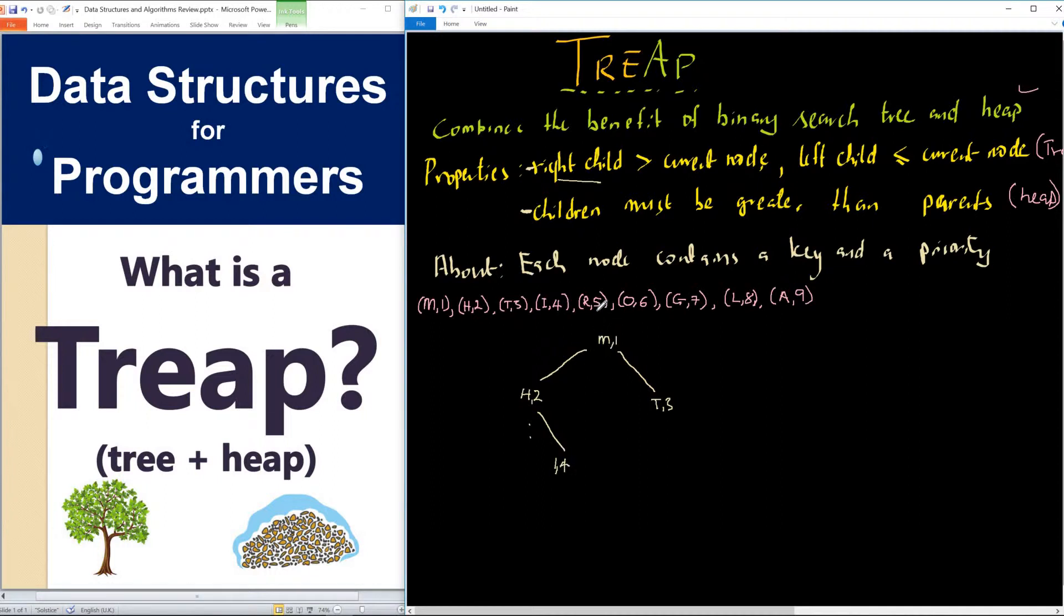Now we have R5. Let's use R. R compared to M is greater than M, so it goes this way. R compared to T is less than T, so it goes this way. 5 is greater than every other thing on top, so we put R5 right here.